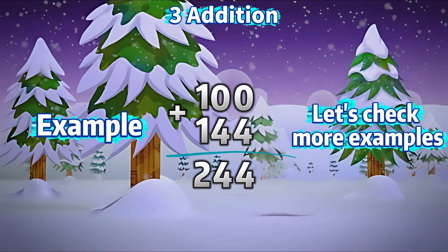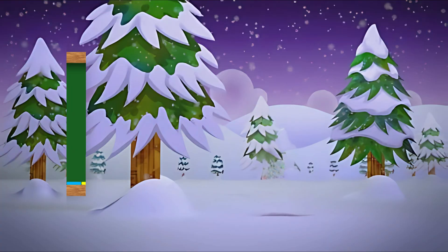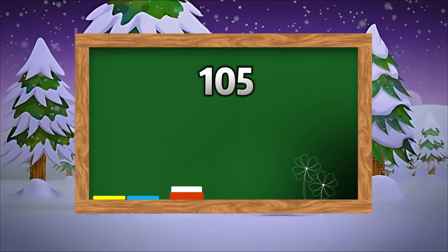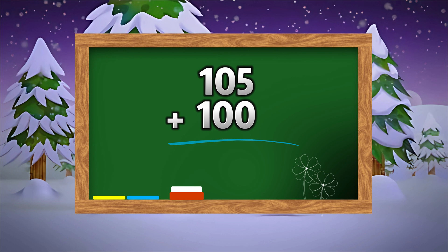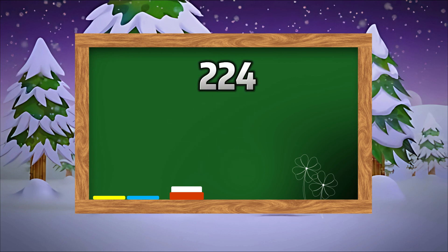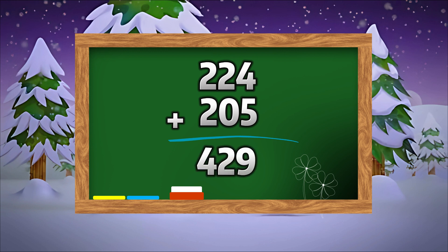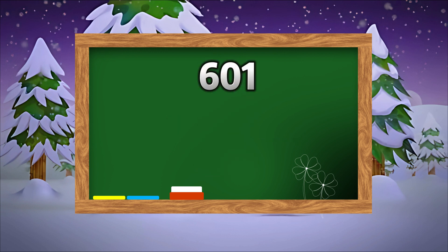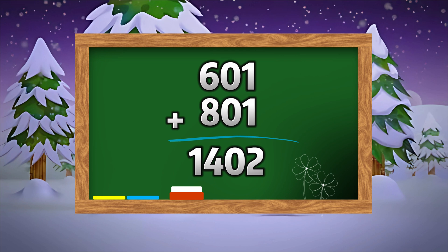Let's check more examples. 105 plus 100 is equal to 205. 224 plus 205 is equal to 429. 601 plus 801 is equal to 1,402.